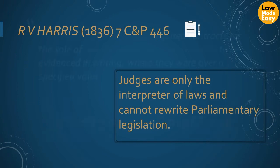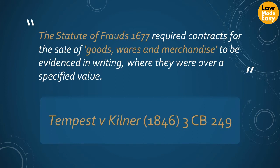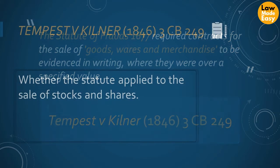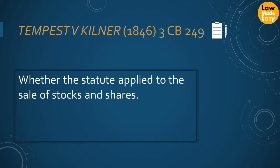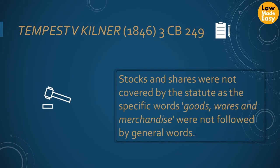Another example: Tempest against Kilner. The Statute of Frauds 1677 required contracts for the sale of goods, wares and merchandise to be evidenced in writing where they were over a specified value. The court construed whether the statute applied to the sale of stocks and shares. The court held that stocks and shares were not covered by the statute, as the specific words goods, wares and merchandise were not followed by general words.